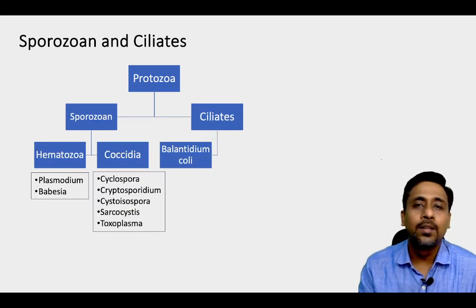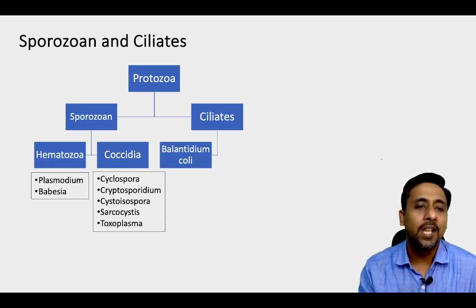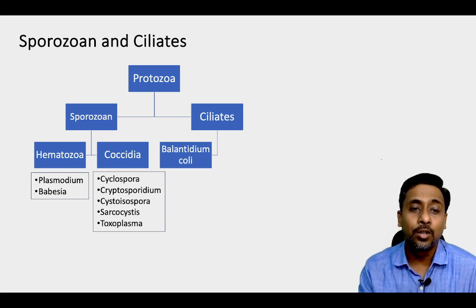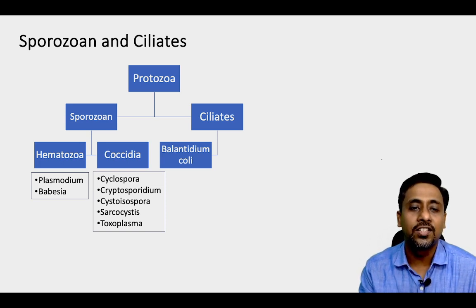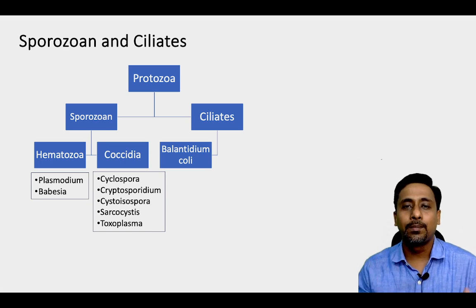The other two protozoan parasites are Sporozoa and Ciliate. Sporozoa are further classified into Hematozoa and Coccidia. Hematozoa include Plasmodium and Babesia. Coccidia consists of opportunistic sporozoan parasites which cause diarrhea in immunocompromised individuals, especially in HIV and AIDS patients: Cyclospora, Cryptosporidium, and Cystoisospora. Two more coccidian parasites are Sarcocystis and Toxoplasma. There is a single ciliate pathogenic to humans: Balantidium coli, which is also the largest protozoan parasite.